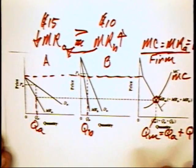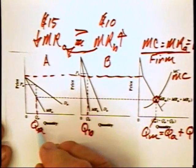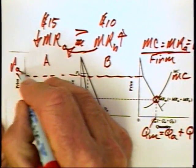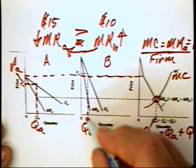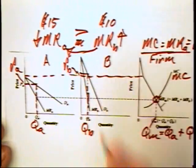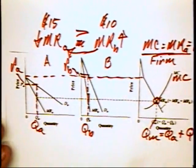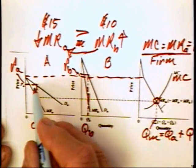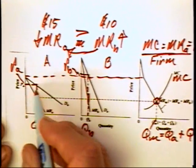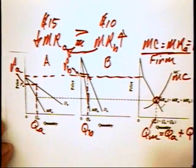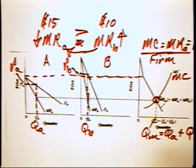The firm must now decide how much to charge for these quantities in the two markets. It can sell quantity QA at price PA and quantity QB at price PB. Notice the expected result: in the market with more elastic demand, you get a lower price, and in the market with more inelastic demand, you get a higher price.